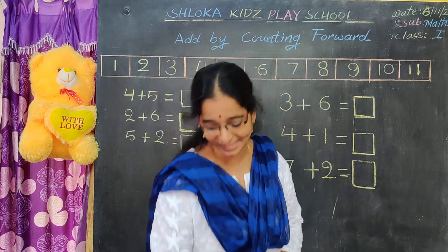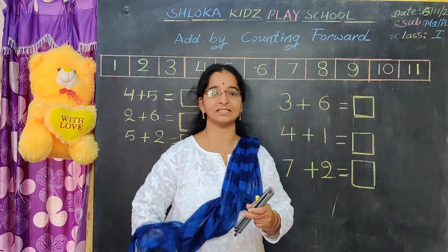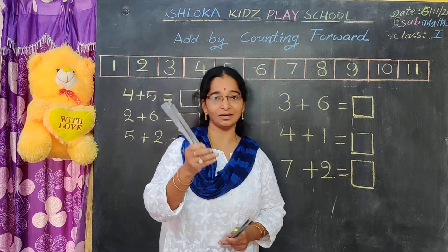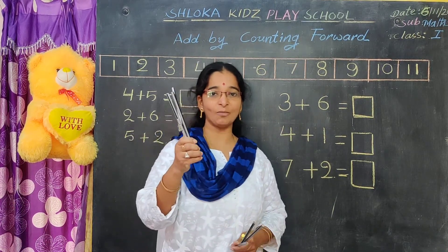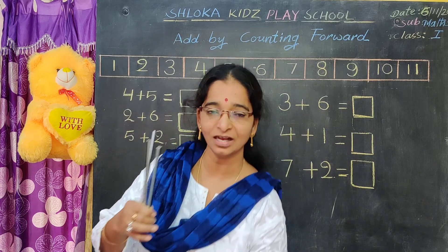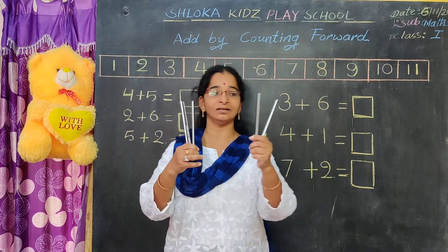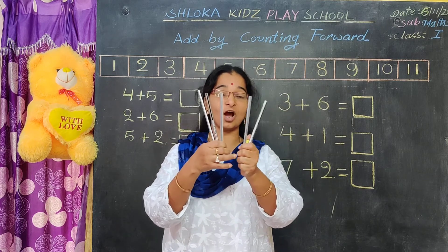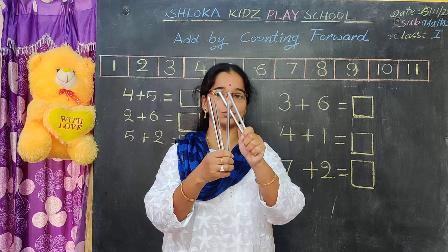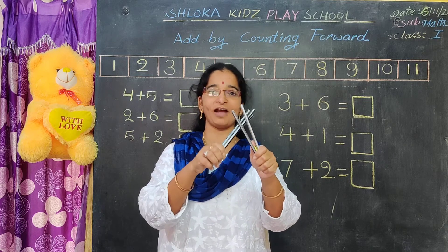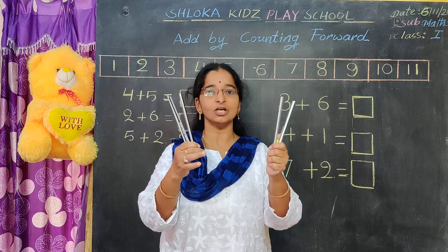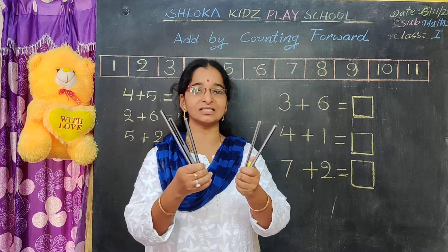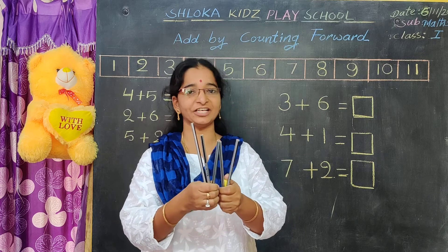How will we count? For example, here I have three pencils in my hand. How many pencils are there? Three pencils. So two more pencils I got. How many does it become? One, two, three, four, five. So counting is nothing but the addition. Counting the number of pencils is nothing but the addition.